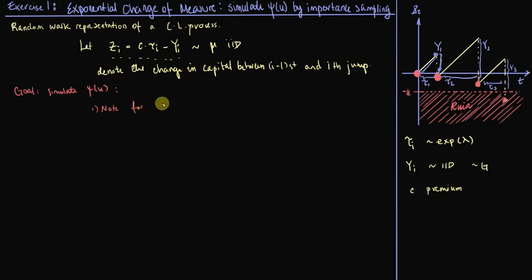Note that if we define S_N as the sum of Z_1, Z_2, and so on up until Z_N, then we can describe the probability of ruin as the probability that S_N goes below minus u. So, the probability that the change in capital from time zero up until the n-th jump, that that change in capital eats up the entire initial capital for some n in the natural numbers. This is one way that we can describe the probability of ruin.